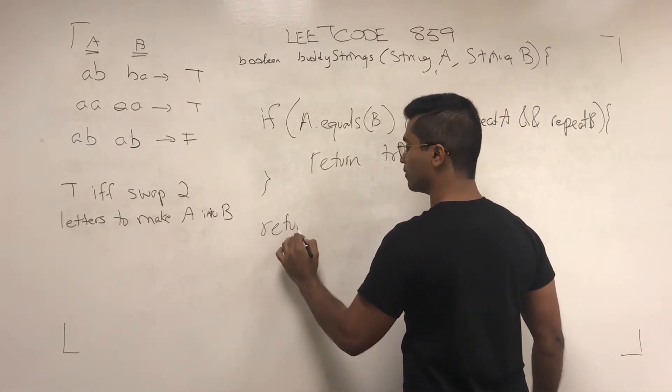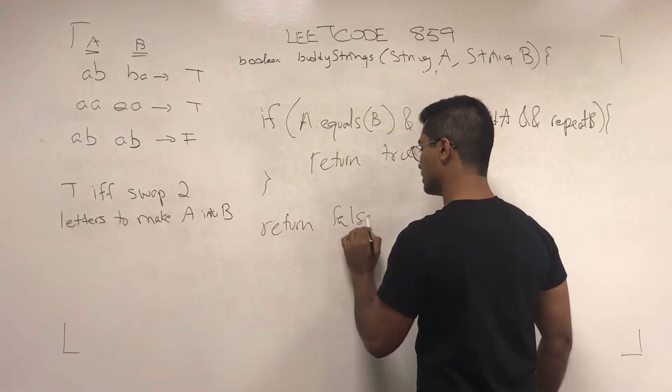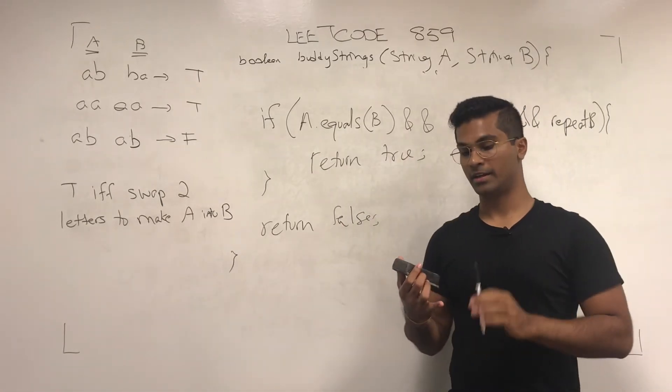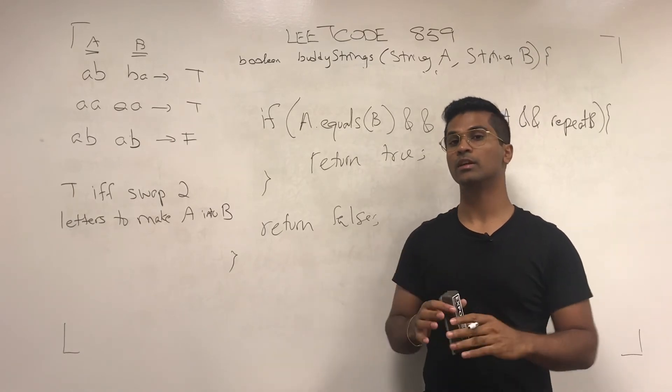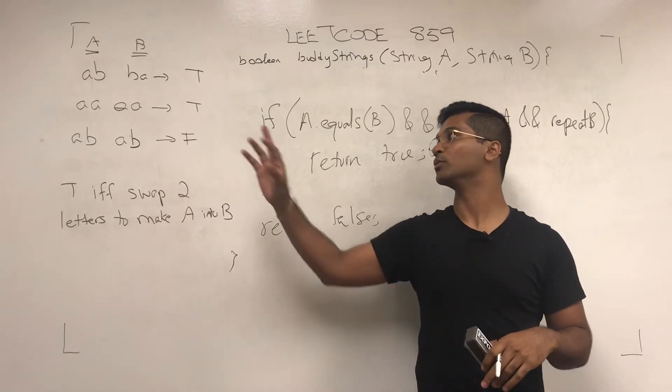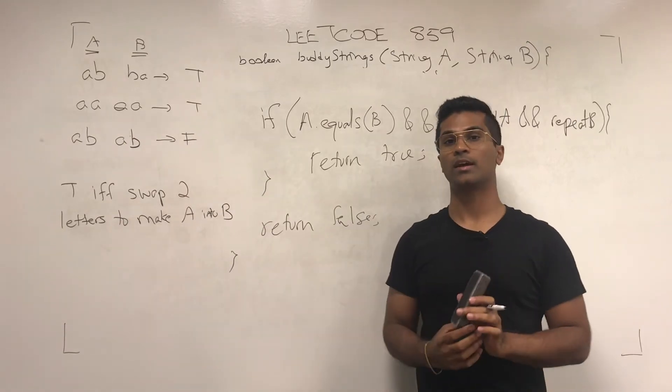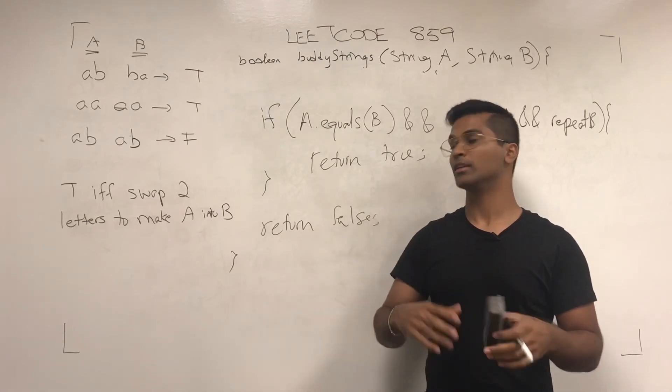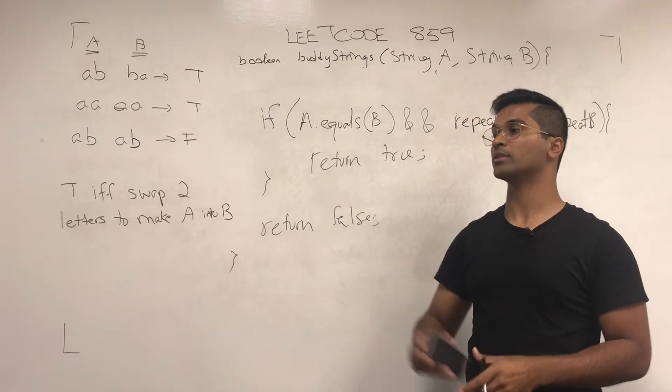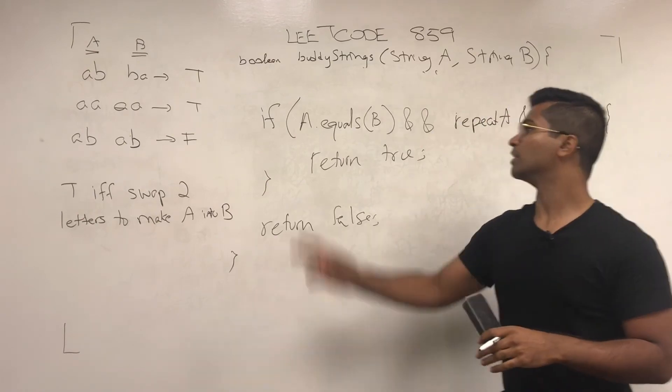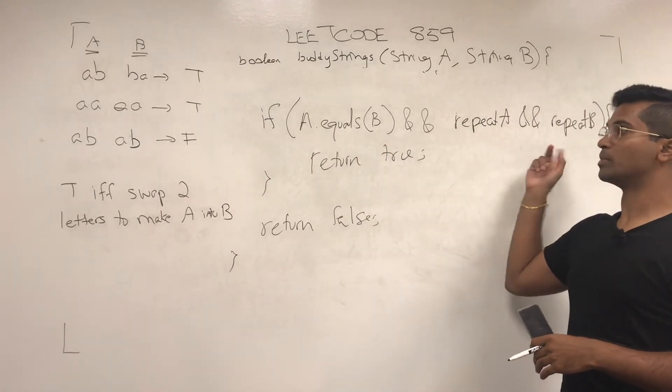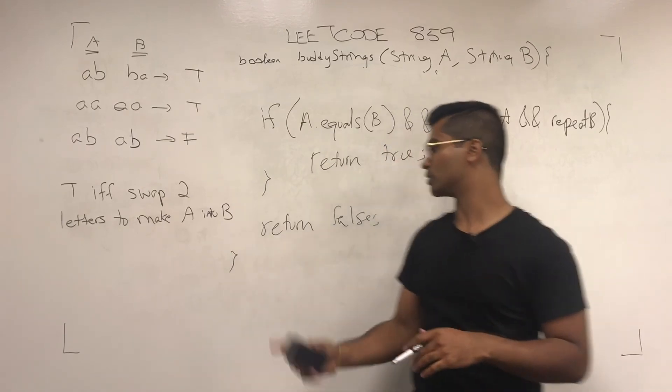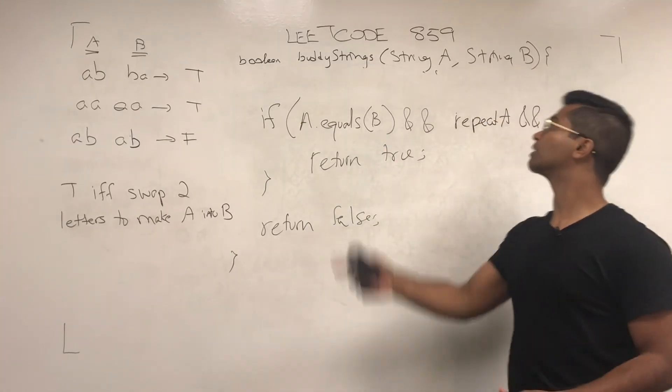If none of what we tried works out, then we return false. So let's recap what we did. We had a list of integers that kept track of mismatching positions. We had to find out if they're repeating characters, and then we checked if the size of the position differences was two. Then we saw if we could swap two characters. If that was true, we return true. Else, if they're both equal and there's repeating characters like in this case, then we return true. But if there's any other case, then we just return false. So that's how I solved LeetCode 859.